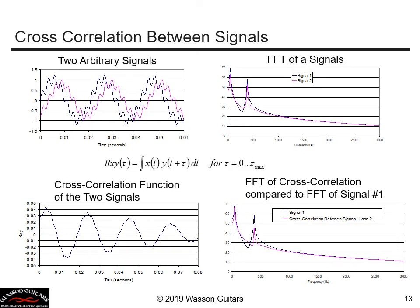Now let's make up a second example where both frequencies agree. We can see in the cross-correlation function that there appears to be a second frequency within that function, and when we take the FFT we see that both frequencies now agree. This magenta curve tells us immediately that there is a strong correlation between both frequencies of the two signals. We've created a new tool that allows us to easily and quickly determine if there is a harmonic relationship between two signals, and we can apply this to more complicated signals like those of our guitar.